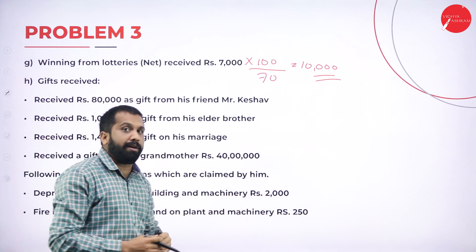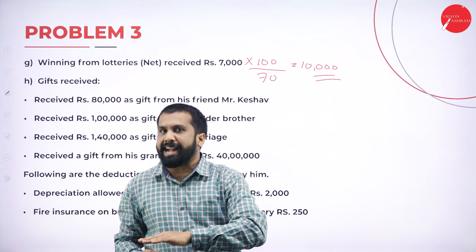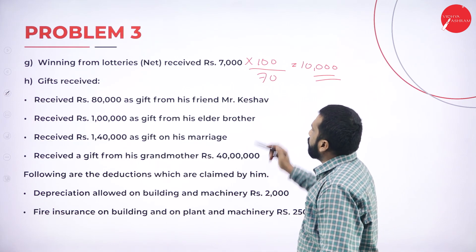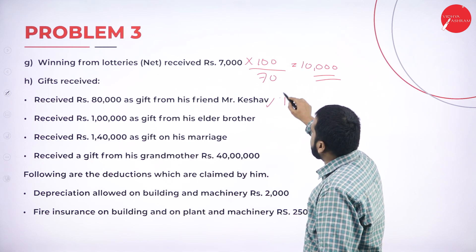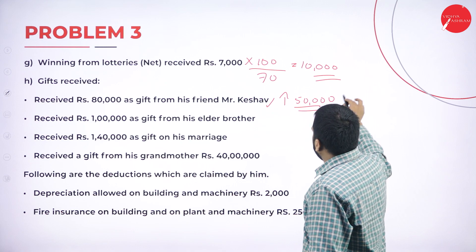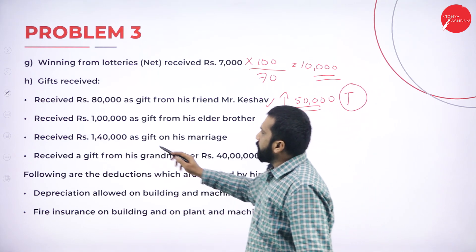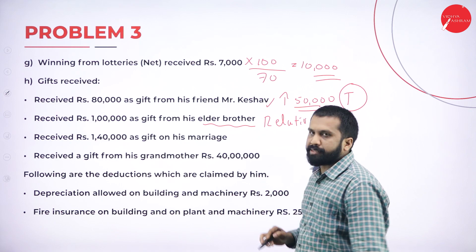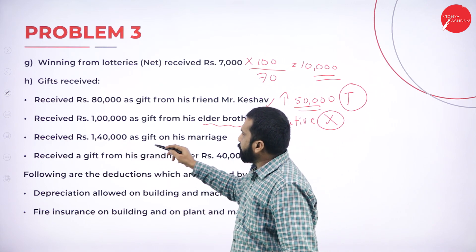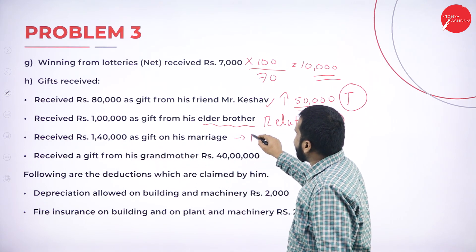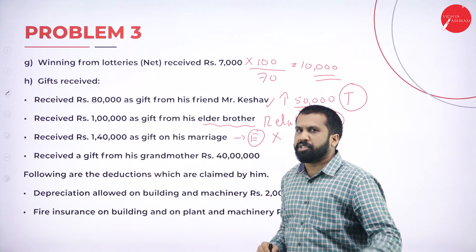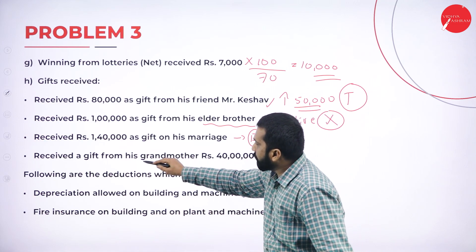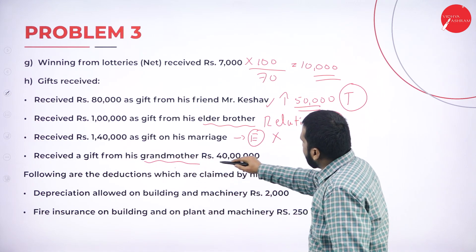Gift received: very important. He received 80,000 as gift from his friend — should we consider it? Yes, because it is above 50,000, so it is taxable. He received 1 lakh from his elder brother — elder brother is a relative, so no tax. He received 1 lakh 40,000 on his marriage — on the occasion of marriage, gifts from anyone of any amount are exempted. Gift from grandmother — grandmother is a relative, so it is exempted.